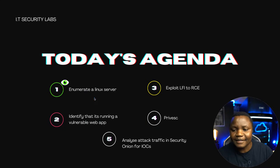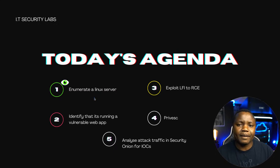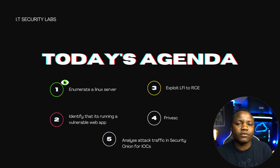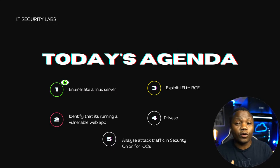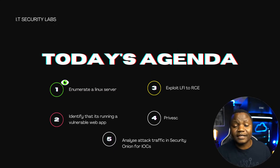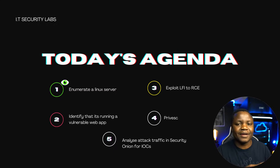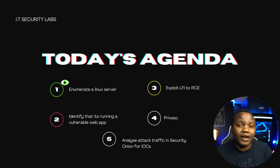Here's the structure of what we'll be doing tonight. We'll start with enumeration of a Linux server, identify the web application running on it, find which part of that application is vulnerable to local file inclusion, and then look at what that looks like on the wire and from the host. I already deployed a server with a Wazuh agent, so we have both a network intrusion detection system as well as host-based intrusion detection happening, which is very exciting for this lab.